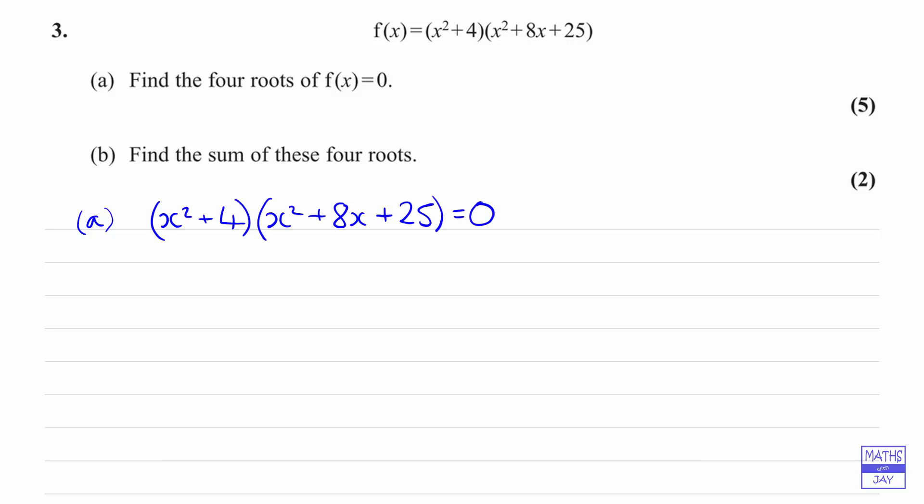We've got two factors being multiplied together giving us zero, so either one or the other of them has got to be zero. So we can say that either x² + 4 is zero, or x² + 8x + 25 is equal to zero.